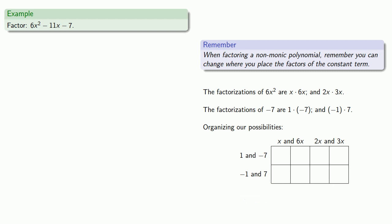We'll try x and 6x first with 1 and negative 7. So does this factor as x plus 1 times 6x minus 7? Nope. Let's switch the location of the constant terms. Nope.